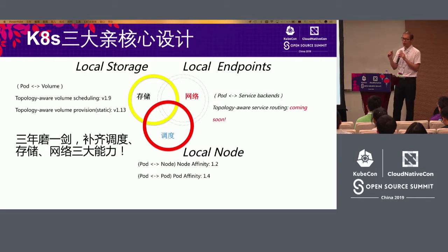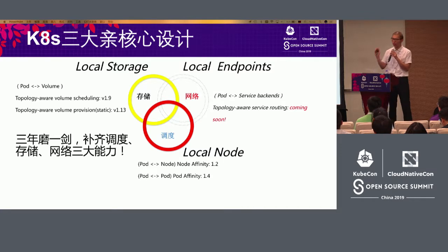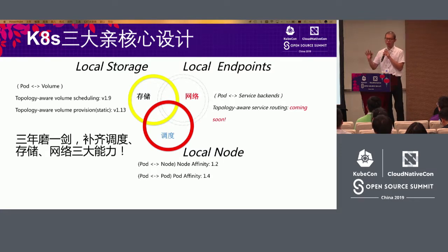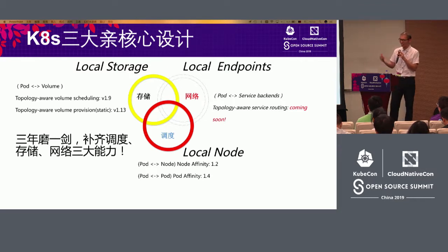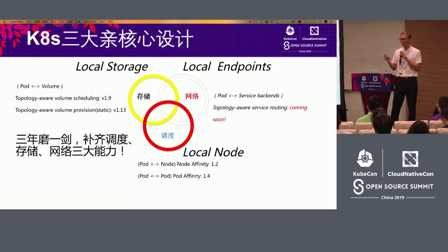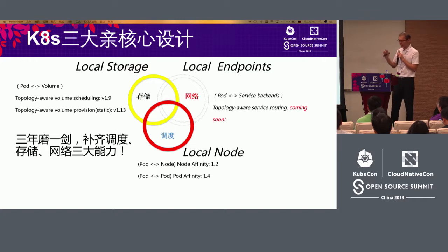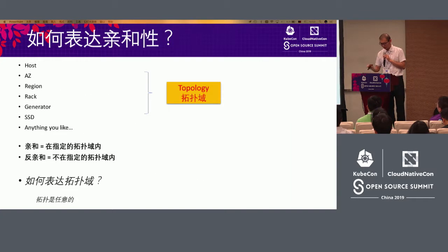So we are thinking it would be better if we can have a local feature — this new topology-aware service routing. One year ago we already finished the design, but we didn't find the proper partner to begin development together. Now we have already updated the version to 1.6.